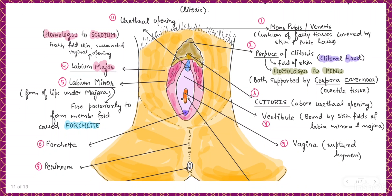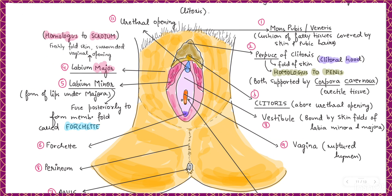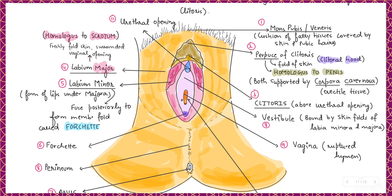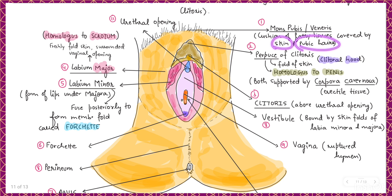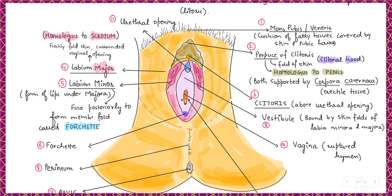Let's examine each portion of the external genitalia. The first structure is the mons pubis, also called mons veneris. It is a cushion of fatty tissue which is covered by skin and pubic hairs, as we can see in the diagram.